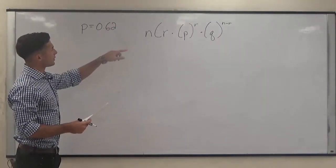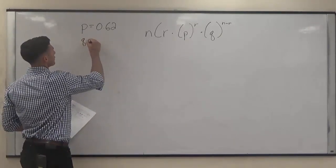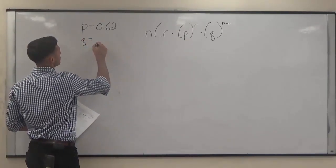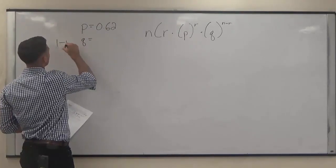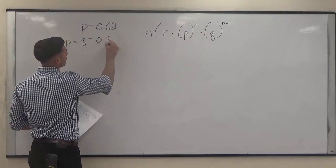We're going to plug that into the problem eventually, but we've got to find our Q first. Our Q is going to be the obverse of that, so it's going to be 1 minus P, which is 0.38.